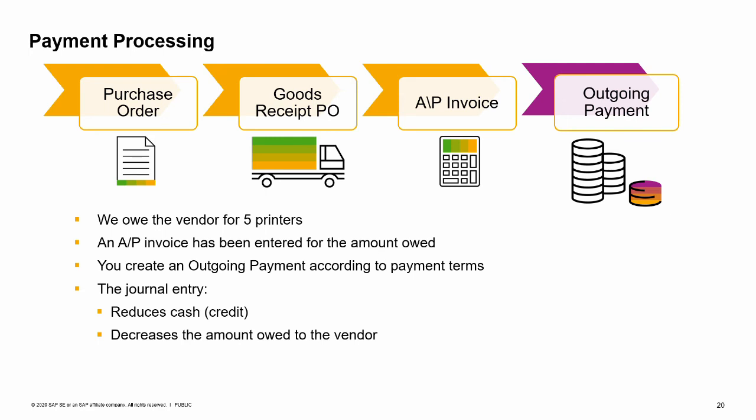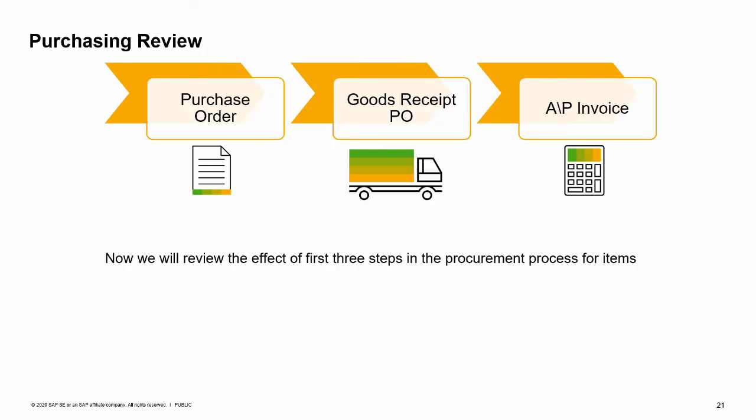We owe our vendor for the five printers that we ordered and received. When we received the vendor's invoice, we entered an AP invoice for the amount owed. Now it is time to create an outgoing payment based on the payment terms for the vendor. When the payment is entered, the system triggers the payment to the vendor and creates a journal entry to record the payment. The journal entry reduces cash and decreases the amount that we owe to the vendor.